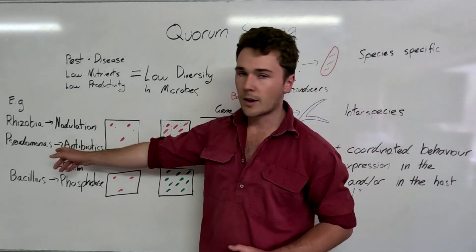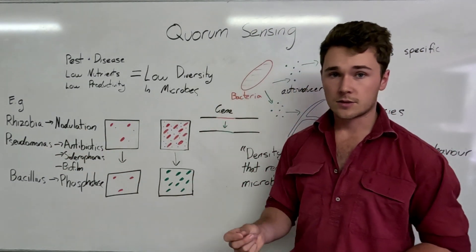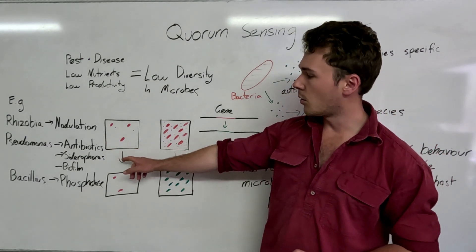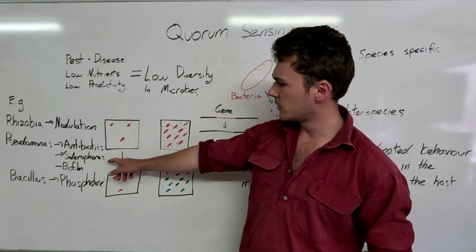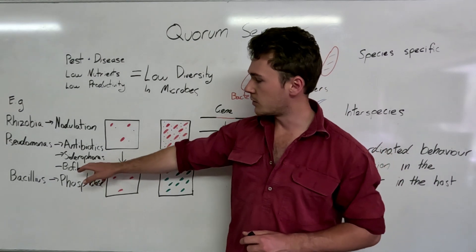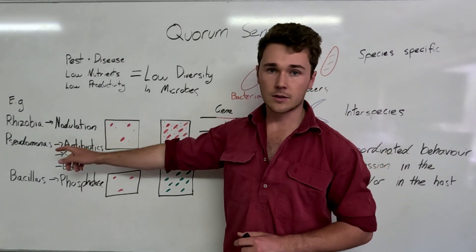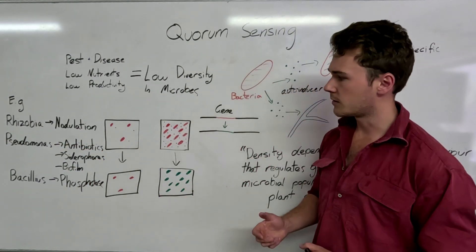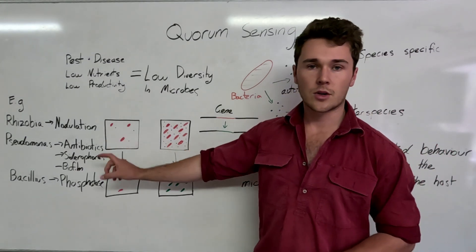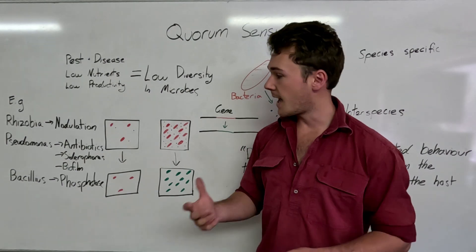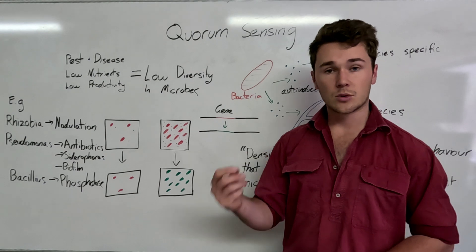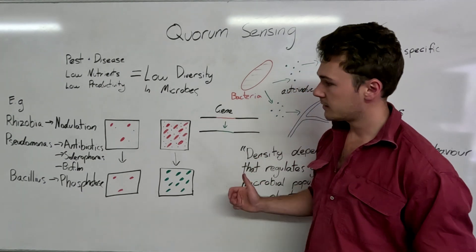Another example is pseudomonas. They use quorum sensing in the production of antibiotics, a thing called siderophores which is used in the chelation of iron as well as biofilm, which helps to protect the bacteria during stressful times. Likewise, they require a certain threshold in order to be activated. Antibiotics can be used to defend against different soil-borne pathogens for plants.